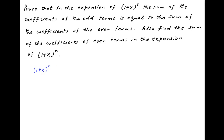The standard binomial expansion of (1 + x)^n is equal to C0 plus C1·x plus C2·x² plus and so on, and the last term is Cn·x^n.